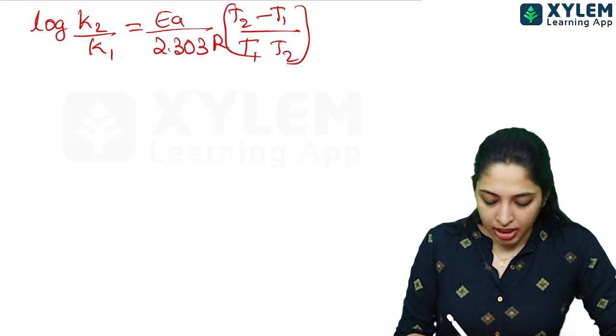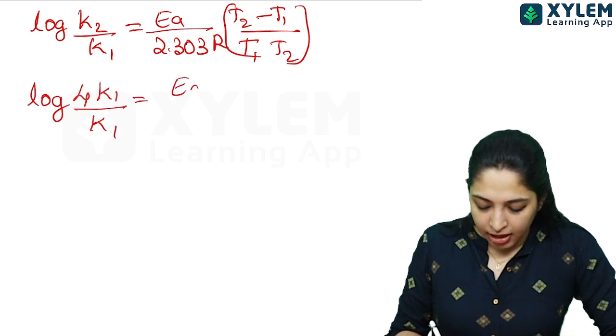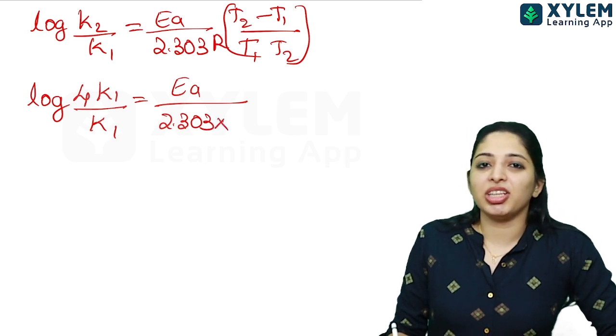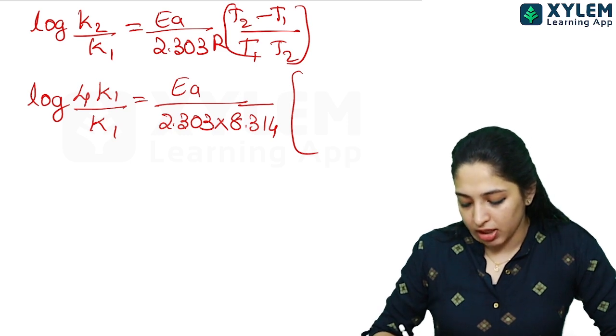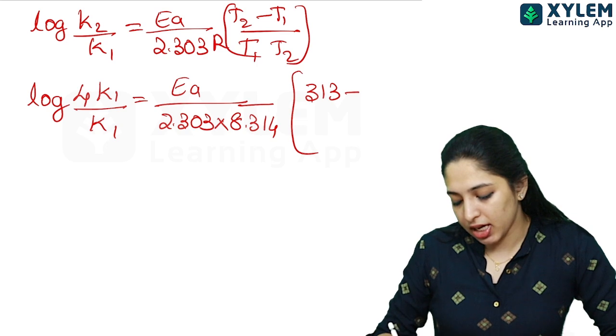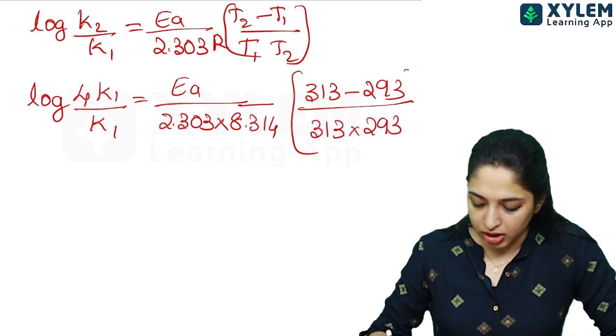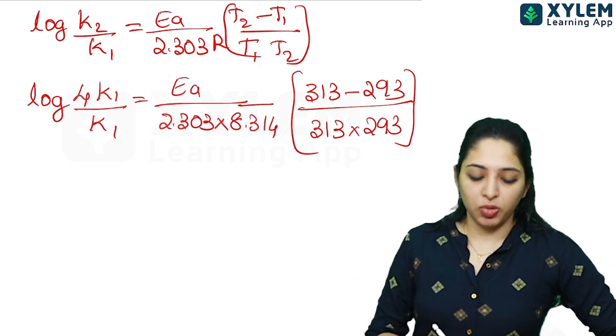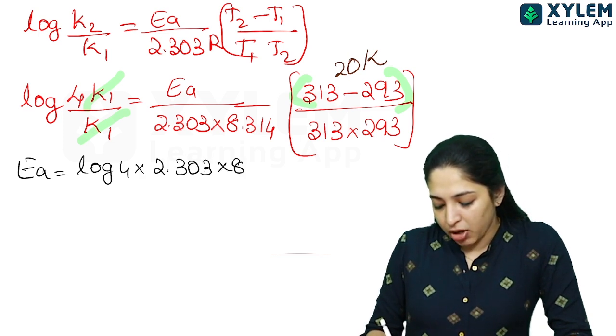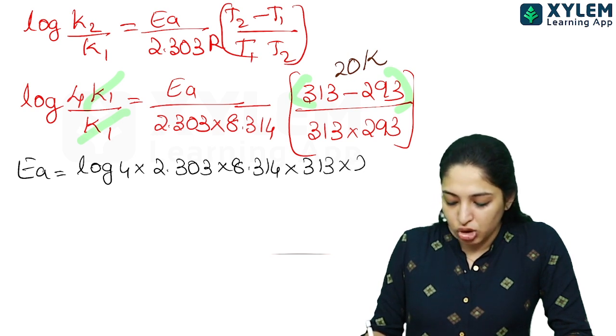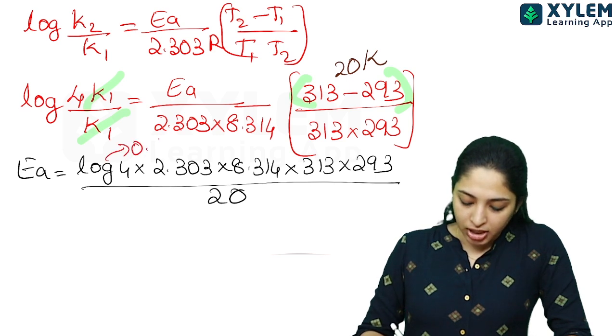Log 4K1 by K1 equal to Ea by 2.303 into R, the value is 8.314 joules per mole per Kelvin, into T2 minus T1, that's 313 minus 293, by T1 into T2, 313 into 293. Ea equal to log 4 into 2.303 into 8.314 into 313 into 293 divided by 20. Log 4 value is 0.6020.